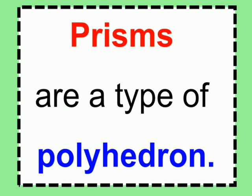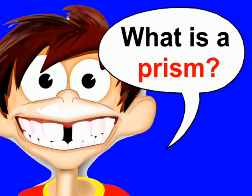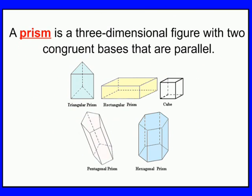Prisms are a type of polyhedron. So what exactly is a prism? Well, a prism is a three-dimensional figure. And this is the important part: it has two congruent bases that are parallel.